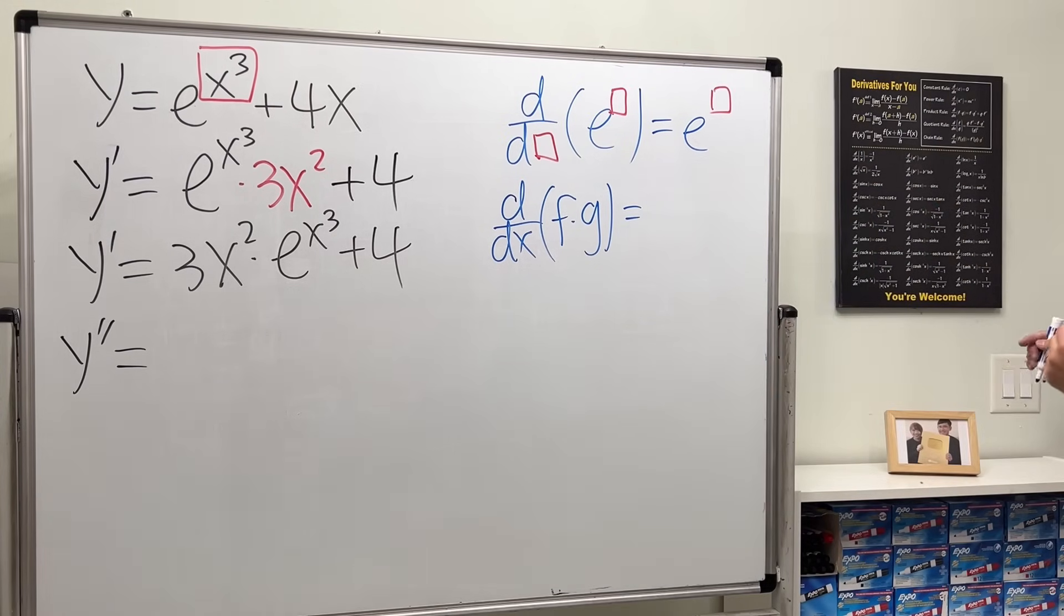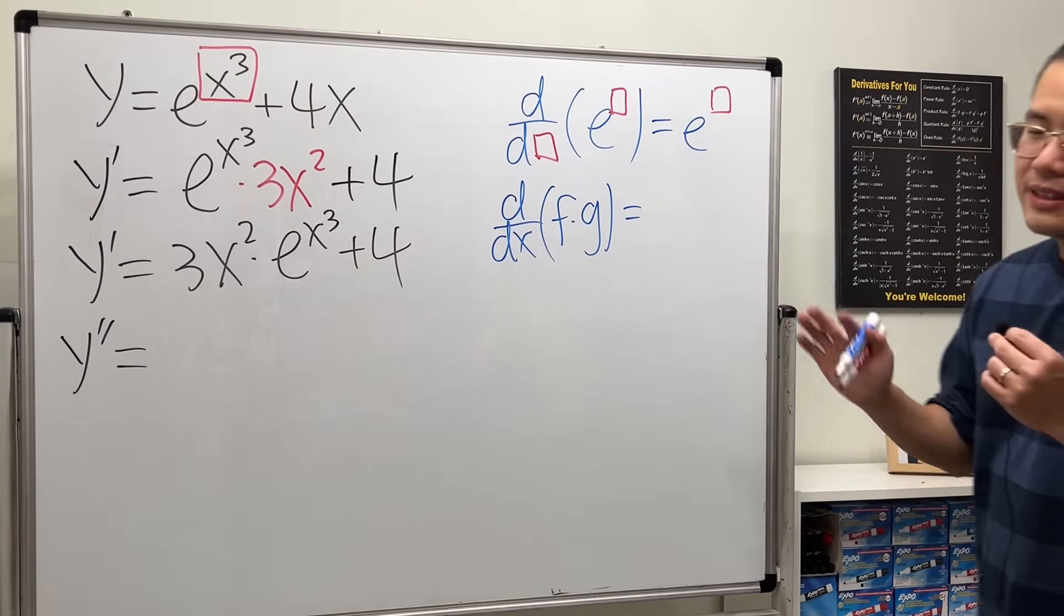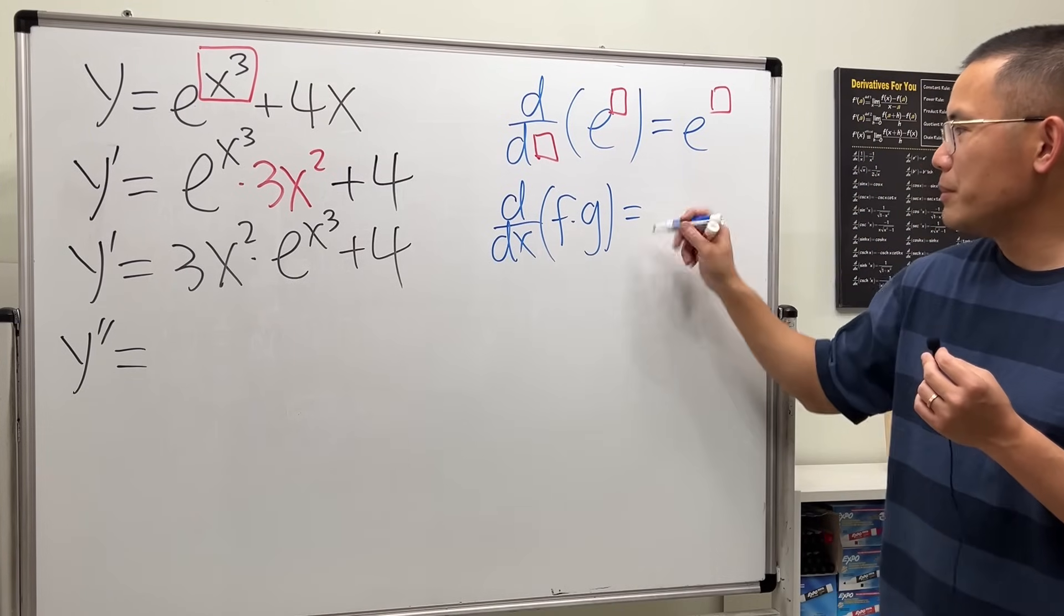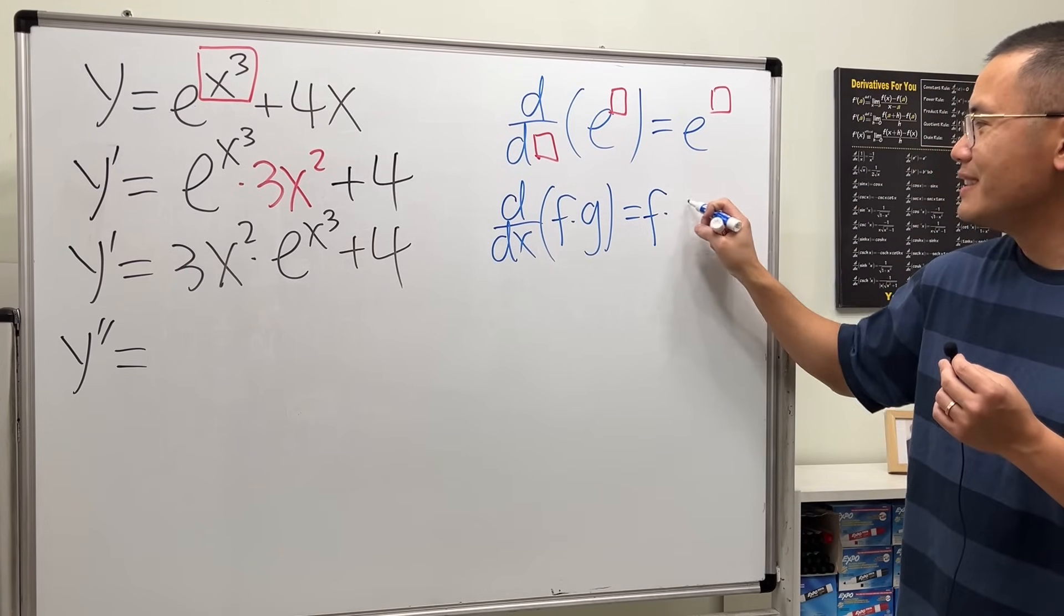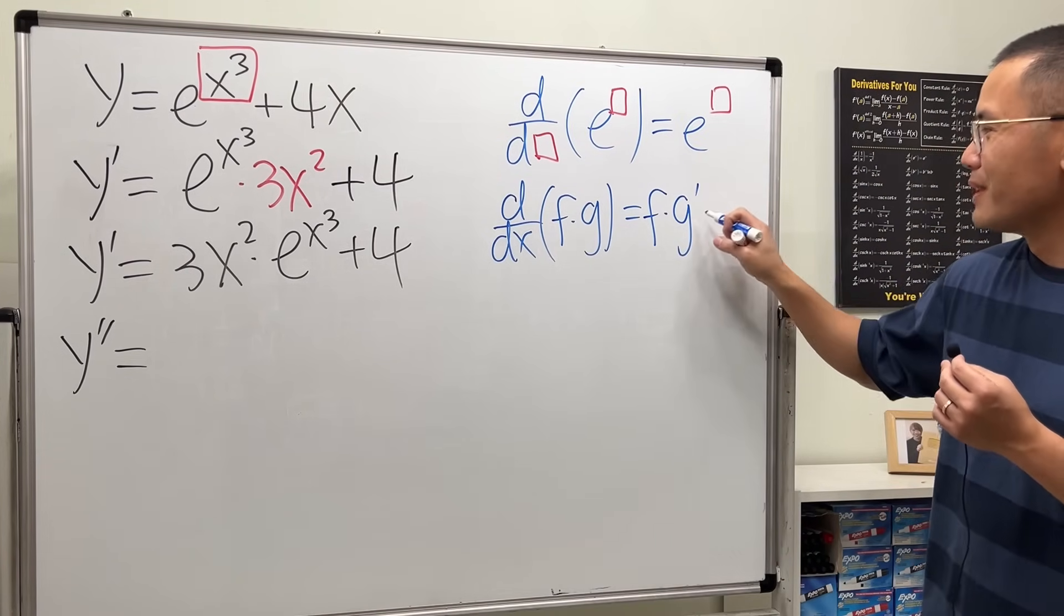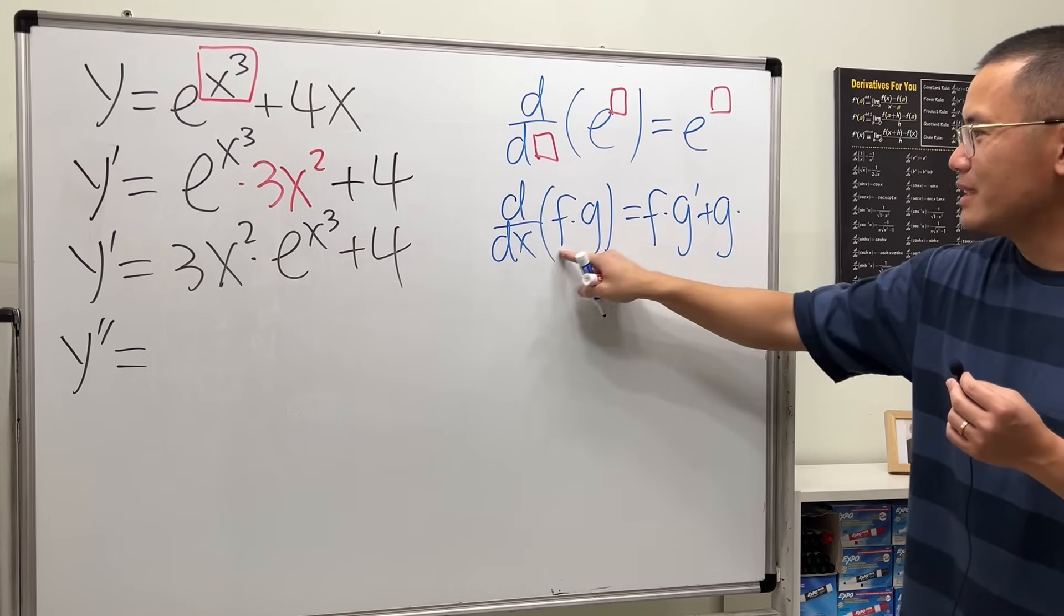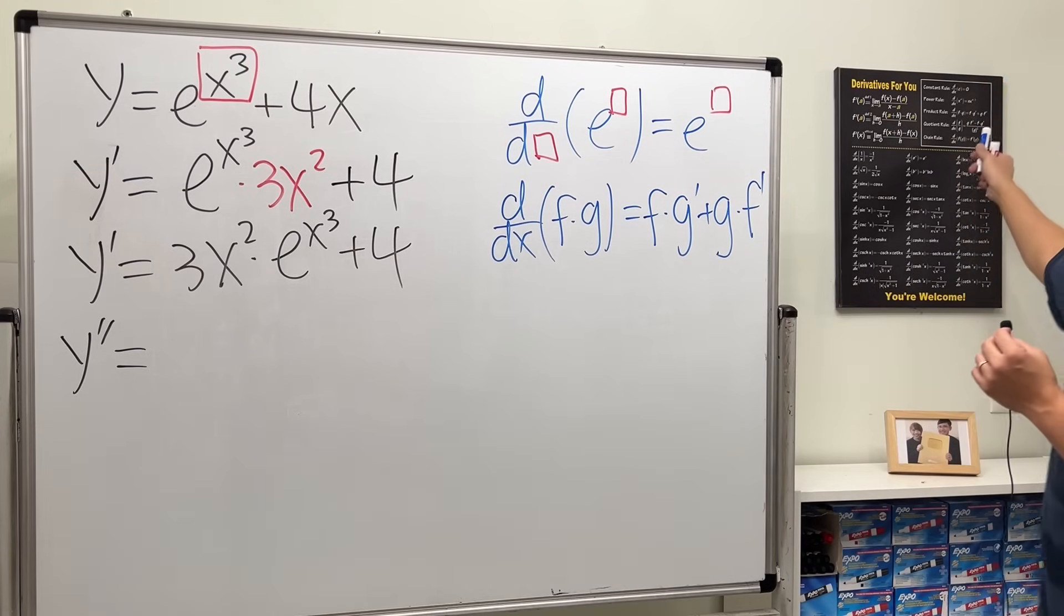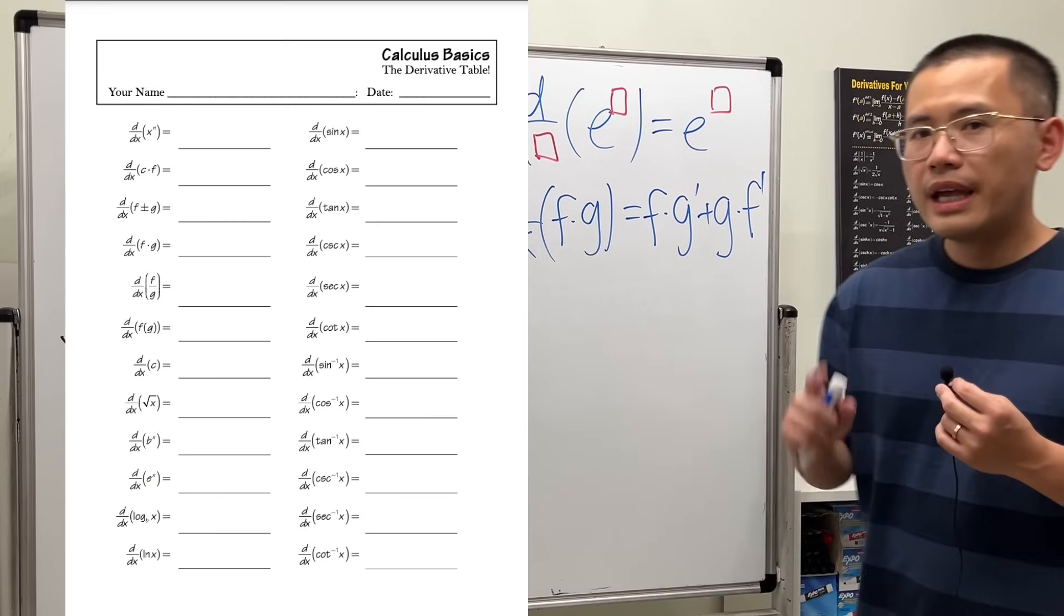I kind of forgot - okay it's right here. The formula is: keep the first function times the derivative of the second, plus the second function times the derivative of the first. And now